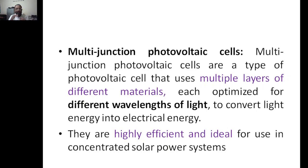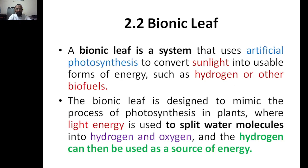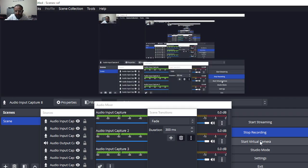Since sunlight varies in wavelength throughout the day — sometimes intense, sometimes dull — multi-junction cells use multiple layers to capture almost all the energy across different wavelengths. They are highly efficient and ideal for concentrated solar power systems. These are just a few examples; the idea is to have efficient, affordable, and environmentally friendly solar cells. The next topic, the bionic leaf, will be studied in the next class.